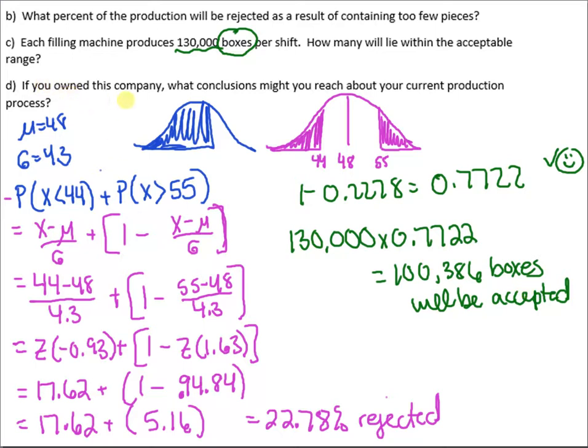Now, if you own this company, what conclusions might you reach about your current production process? Well, in my opinion, if you're rejecting almost a quarter, like one out of every five boxes, this is too many. I would definitely try to be more accurate and more efficient with that.